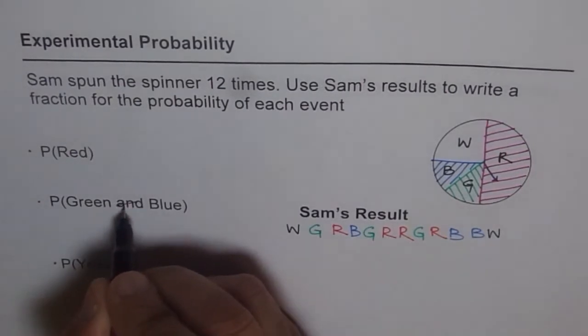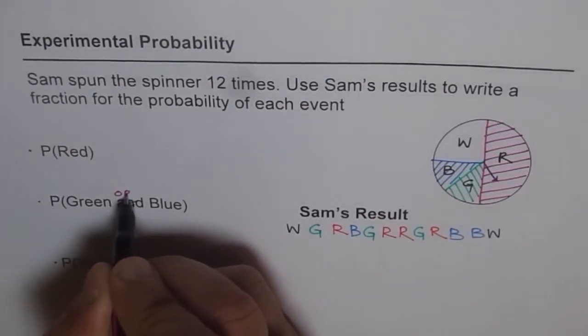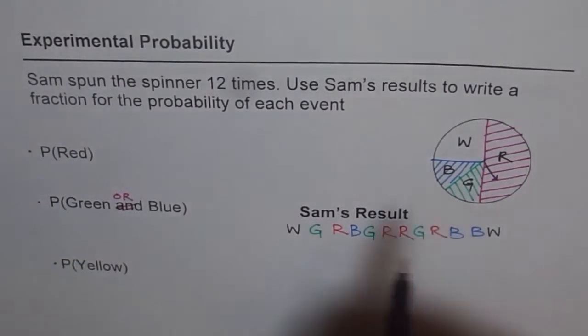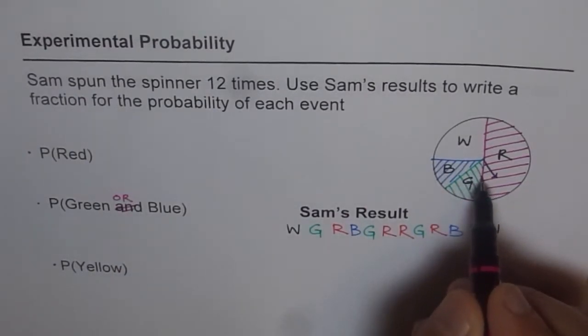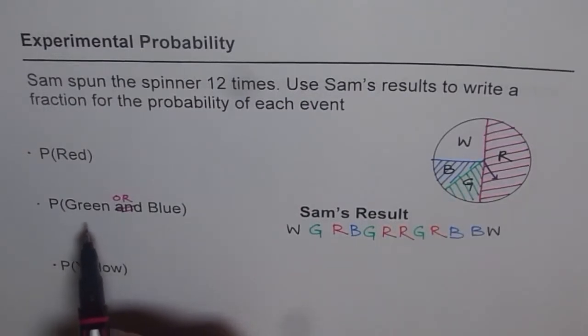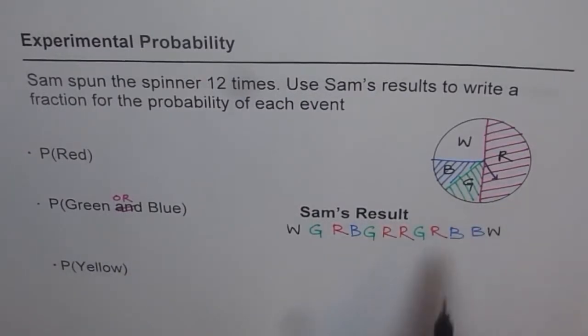So actually I'll change this. I'll write green or blue. A spinner cannot really be on both the colors unless it is right in the center. So we'll avoid that ambiguity and we'll write green or blue, either of the two. So that is how the question is.